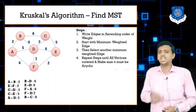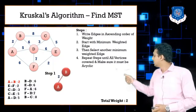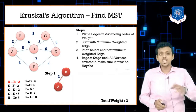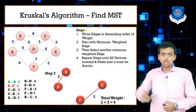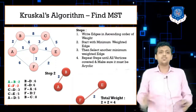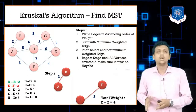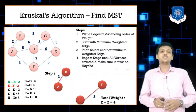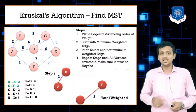Starting with the edge of minimum weight: AB with weight 2 — total weight is 2. Next, we select EF; total weight becomes 2 plus 2, which is 4. Make sure you draw the figure with nodes placed in the same position as the original graph. Next, we select CD; it does not form a cycle, so we can select it.